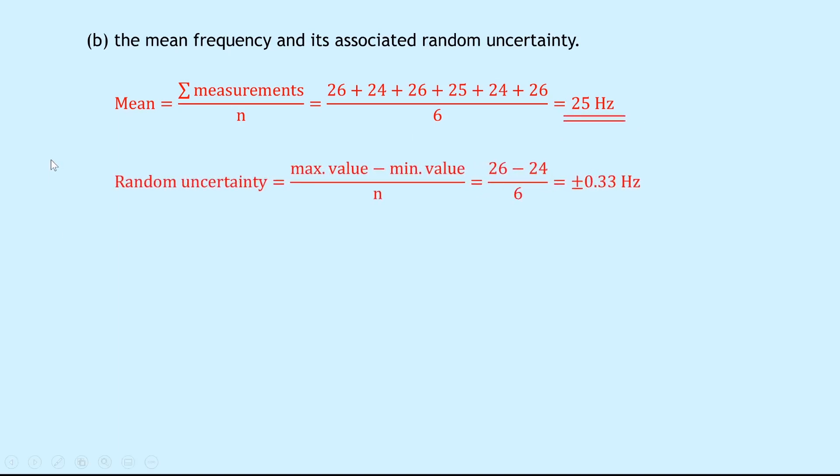The random uncertainty in that mean is equal to the maximum value minus the minimum value over n, which is equal to the biggest value is 26, take away the smallest number is 24, divided by 6, gives us a random uncertainty of plus or minus 0.33 hertz to two significant figures. Now it's okay, because remember one or two is appropriate. Even though the question doesn't ask for this, we might as well write it in absolute form, because that's going to help us with some later questions. So we have 25 plus or minus 0.33 hertz.